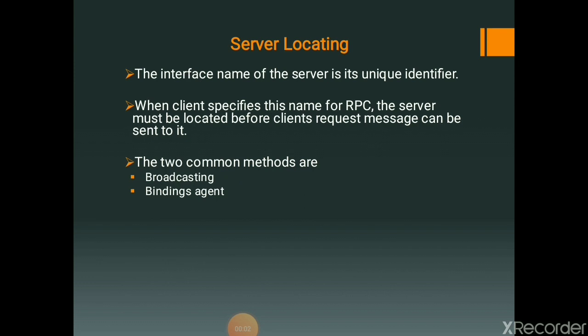The next process is server locating. The interface name of a server is its unique identifier in server locating. When a client specifies the interface name of a server for making a remote procedure call, the server must be located before the client request message can be sent to the server. This is primarily a locating issue and any locating mechanism can be used. Two common methods are proposed: broadcasting and binding agent.